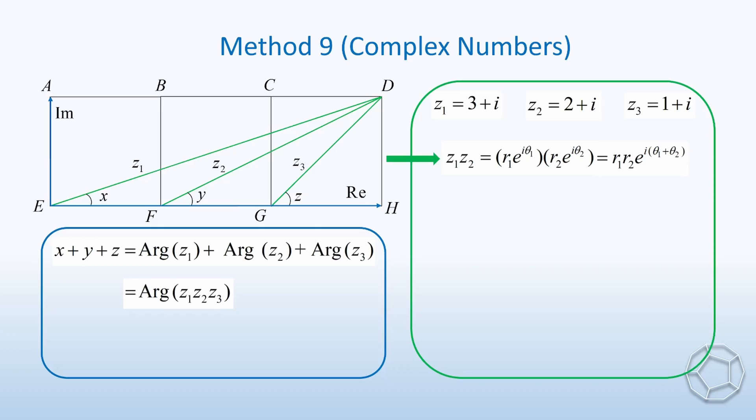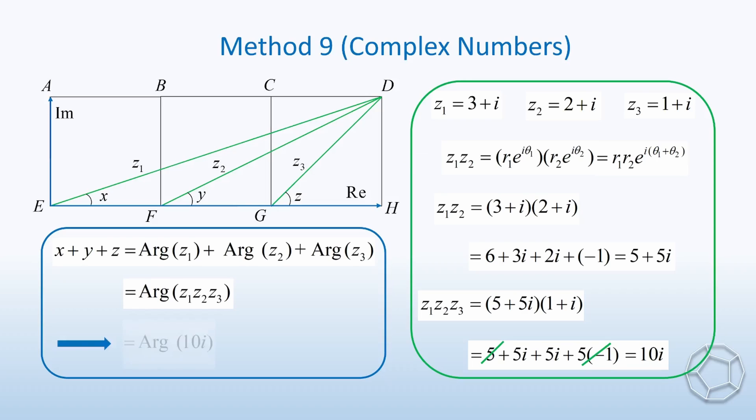Now, we just have to work out the product, which is very straightforward. For z1 times z2, it is equal to 5 plus 5i. Multiply it a second time, then z1 times z2 times z3 is equal to 10i. That means the sum of x, y, and z is equal to the argument of 10i. Because this is a purely imaginary number, therefore, the argument is equal to pi over 2. Alright, that's it.